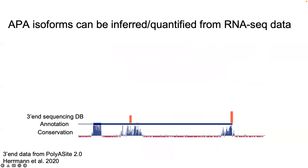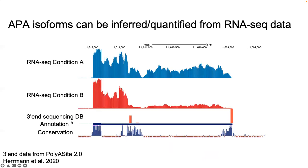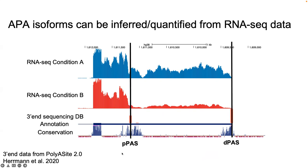So what does this data look like? 3' sequencing data tells us exactly in the genome where the poly-A site was in different conditions, and similarly we have annotation that tells us where we think the different isoforms are. But those 3' sequencing data sets are rare and not available for many conditions, so the field has tried to use RNA sequencing data to both identify the different poly-A sites used within a single gene and quantify their relative usage directly.